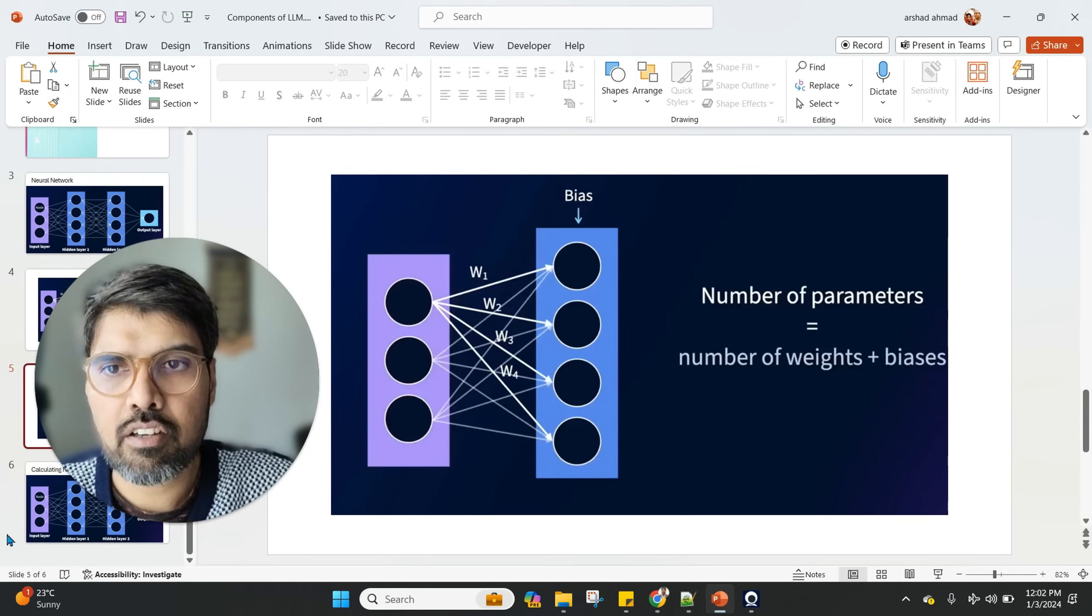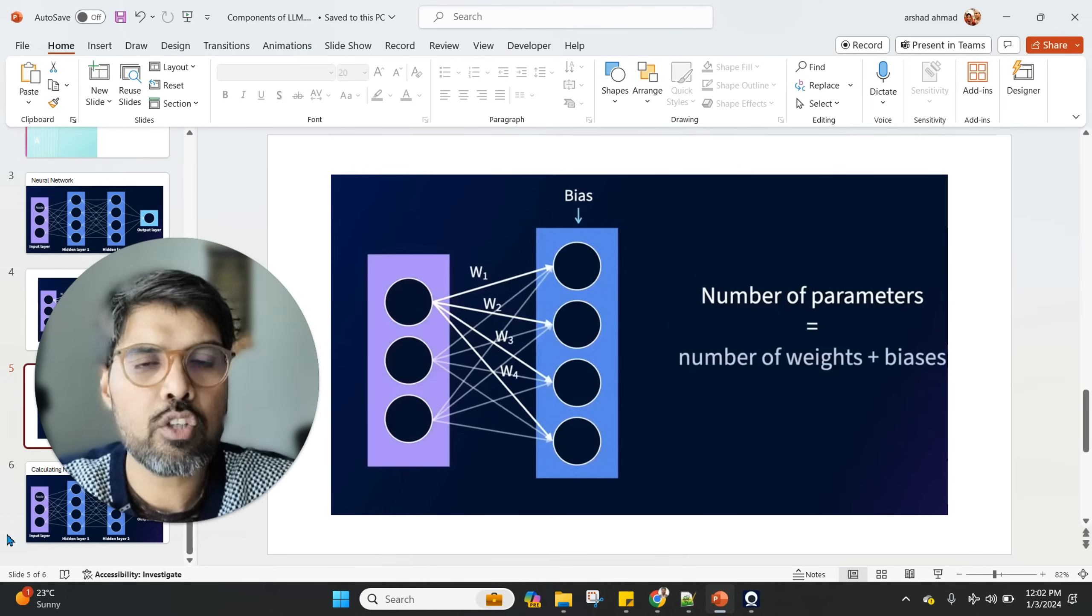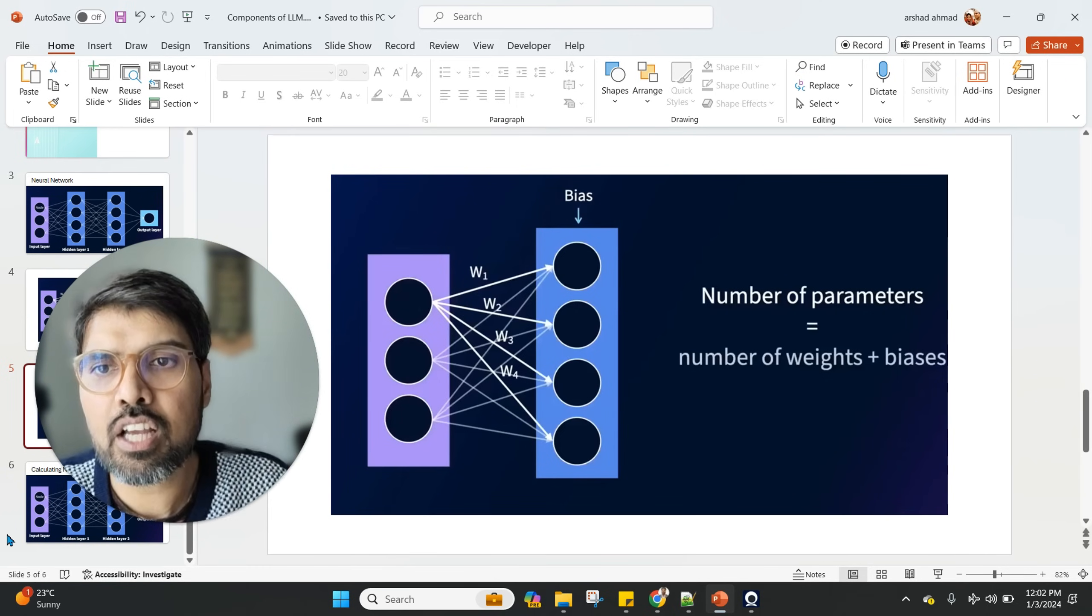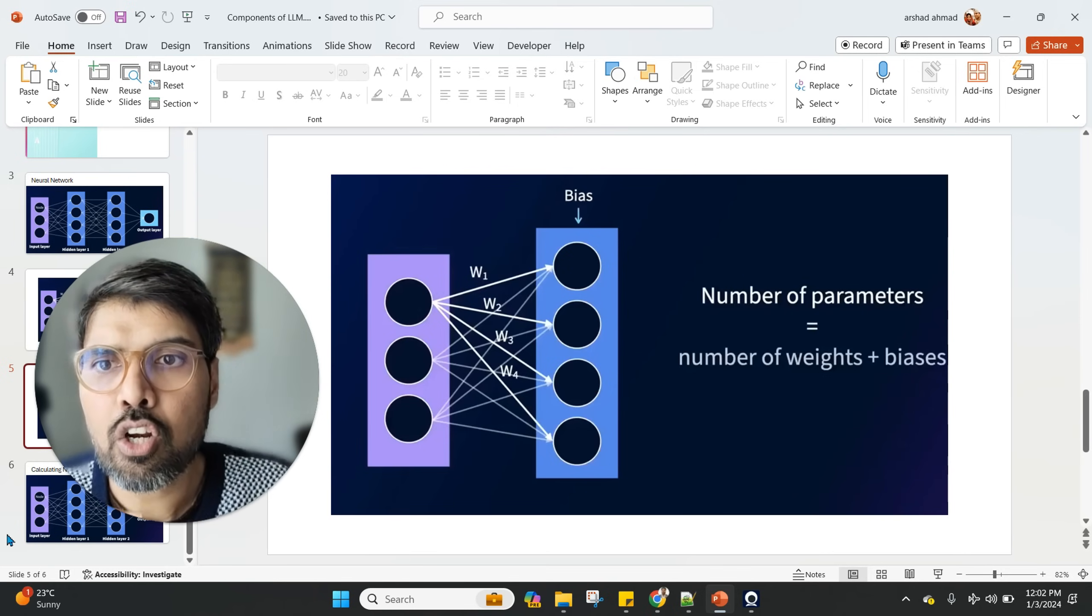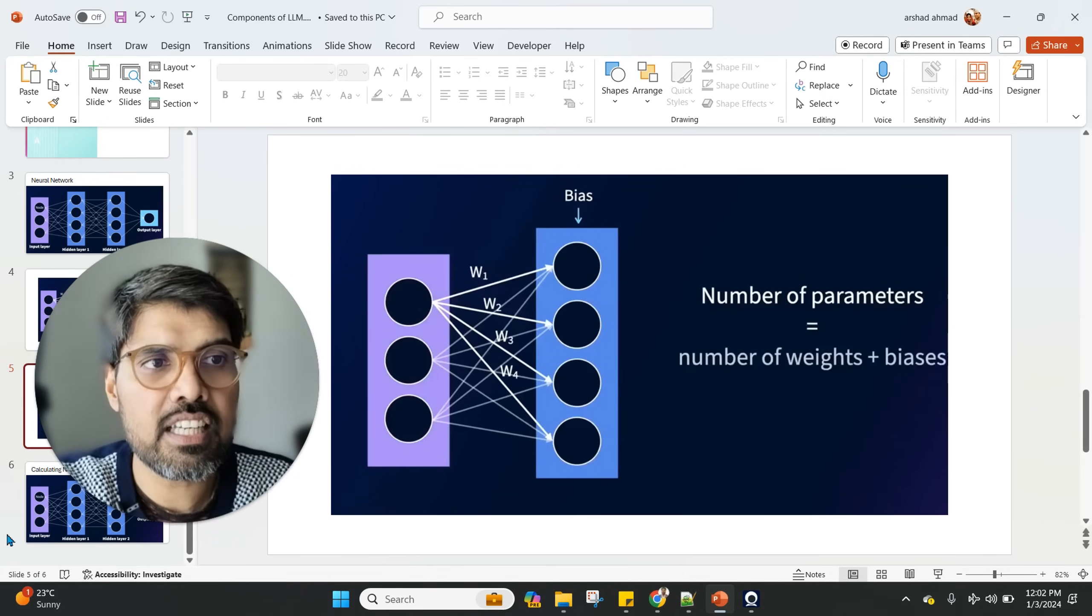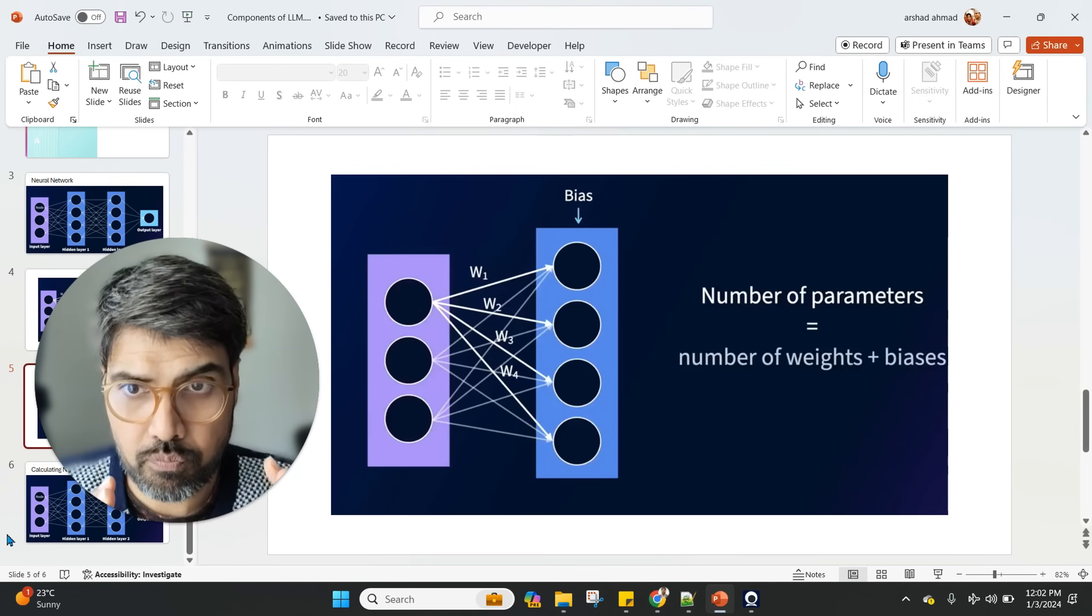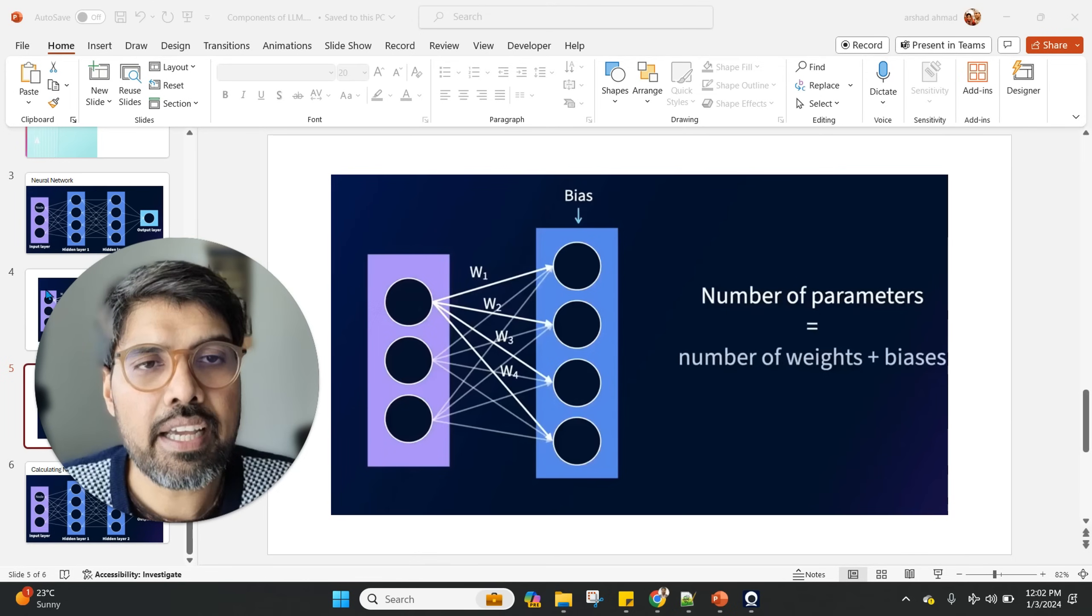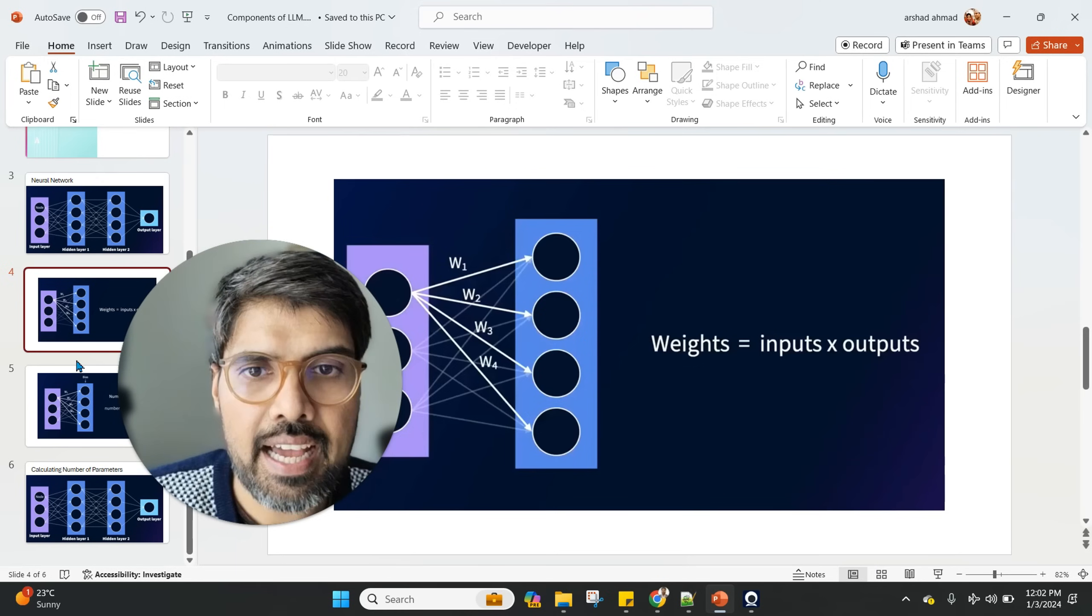From the input layer on the left, there is a line from every node in one layer to all the nodes in the other layer. This type of neural network usually makes a small part of the large language model. Each of the lines that connects one node to another node are the edges, and they represent the weights. This network learns by adjusting those weights. We can easily calculate the number of weights by multiplying the input to the output.